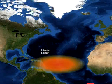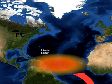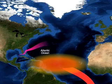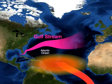Surface water at the equator is heated by the tropical sun. Trade winds created by the same heating effect push this surface water from the Gulf of Mexico towards northern Europe, also known as the Gulf Stream.